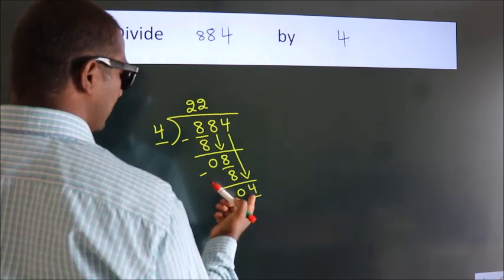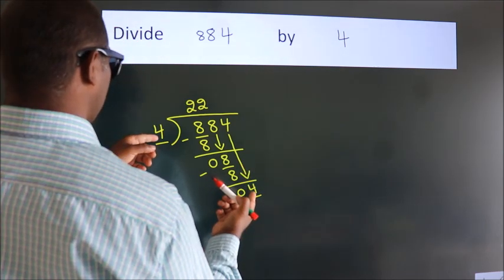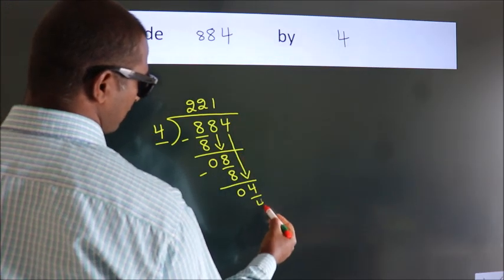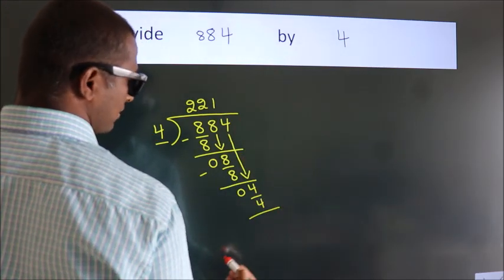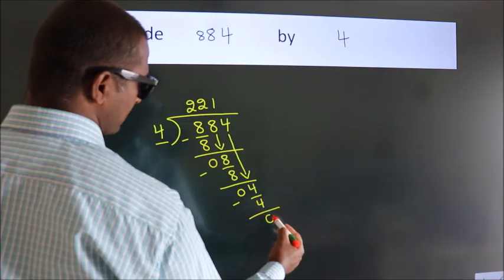When do we get 4 in the 4 table? 4 ones, 4. Now, we subtract. We get 0.